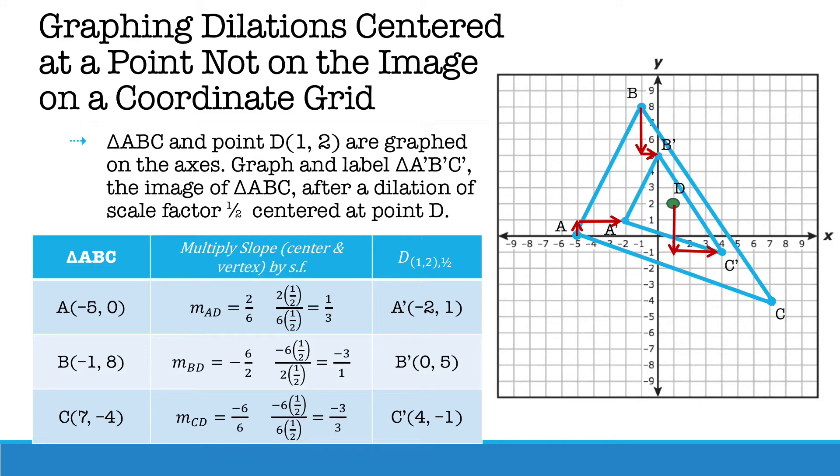After plotting our points this is what the image would look like if we were to dilate about a point that is not the origin and not on the image.